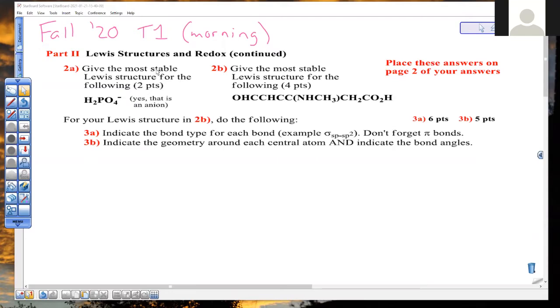2A, we're supposed to give the most stable Lewis structure for the following, H2PO4 negative. So H2PO4 negative, 2A, dihydrogen phosphate, if you're curious as to its name, valence electrons. Each hydrogen brings in one. There's two hydrogens. I'm getting this straight from the periodic table, the Roman numerals at the top of the columns. Phosphorus, group 5, oxygen group 6, and there's four of them.